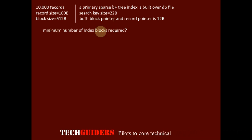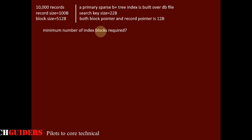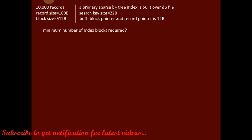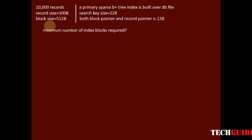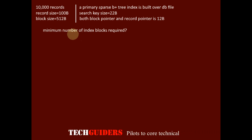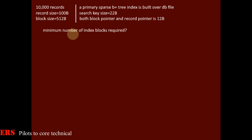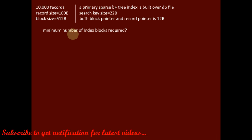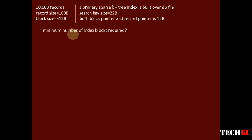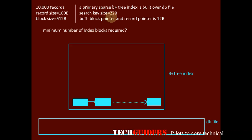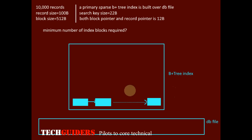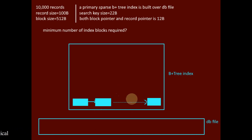We have to find the minimum number of blocks or the minimum number of nodes present in the B+3 index built over this database file. To find the minimum number of nodes, we should consider every node is maximum occupied. This will reduce the number of nodes required as well as the number of levels of the B+3 index. The index is specified as sparse, so the first level itself will be a primary sparse index.